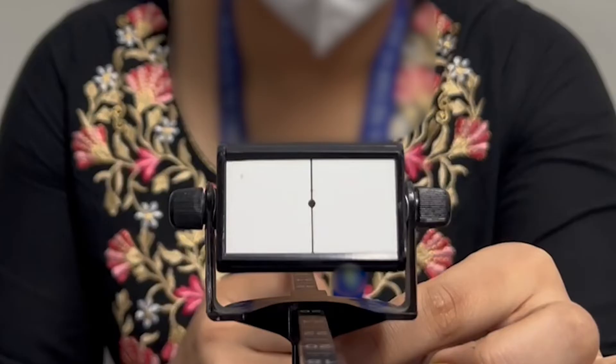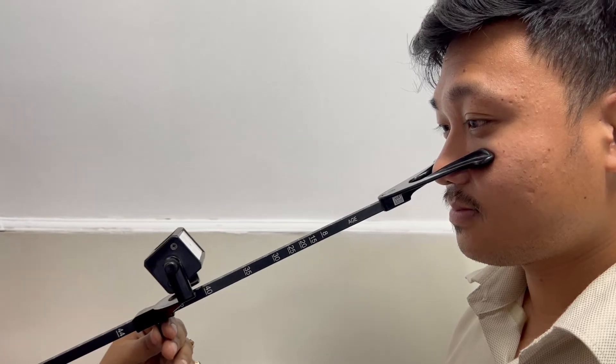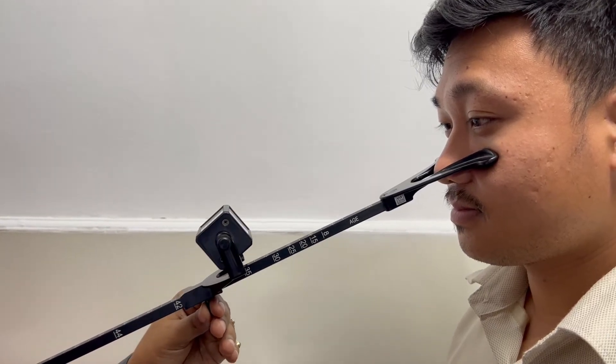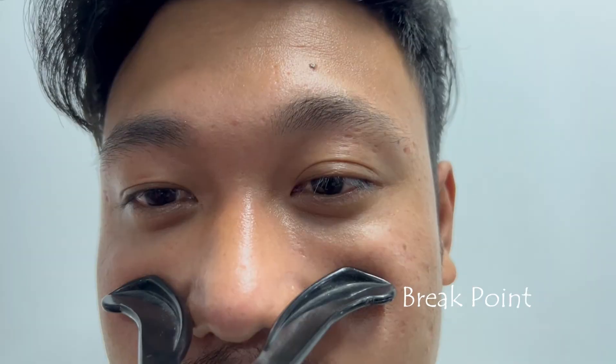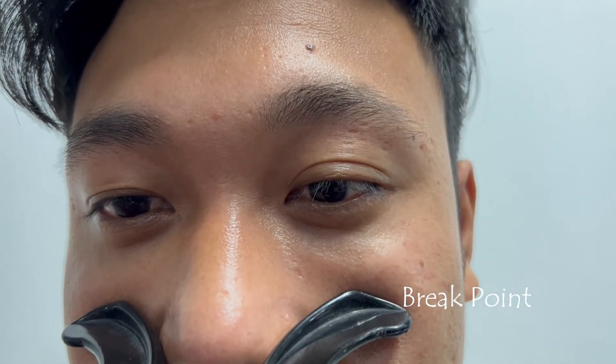Examiner asks the patient to focus on the black dot and slowly moves the target towards the patient's eyes at a constant linear speed. The subjective break point is indicated when the patient either reports diplopia or until the slider is stopped by the cheek rest.